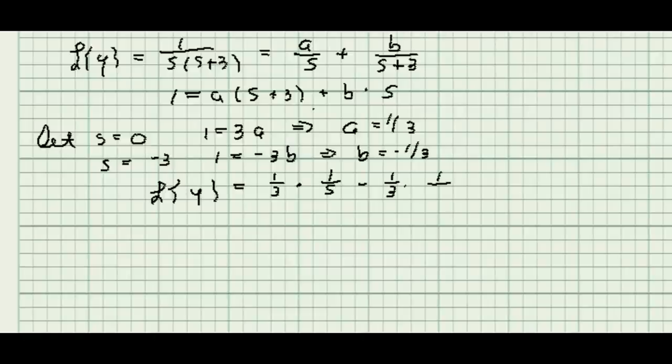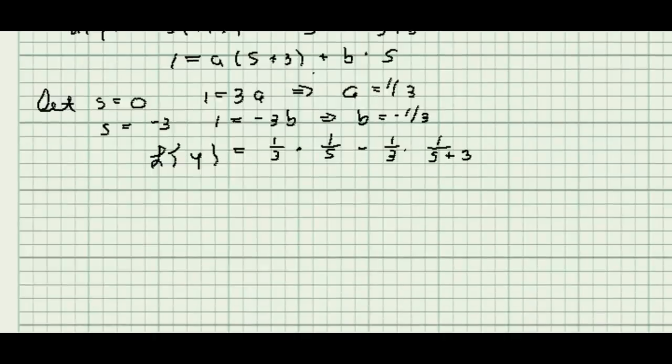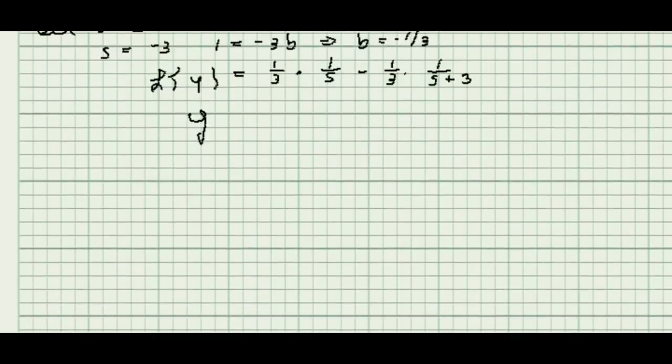So in this case, the inverse Laplace transform of 1 over s is equal to 1. The inverse Laplace transform of 1 over s plus 3 is e to the minus 3t. So I get that y is 1 third minus 1 third times e to the minus 3t. And that is the solution to my differential equation.